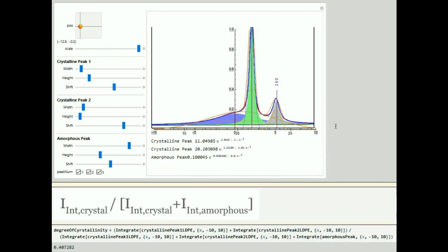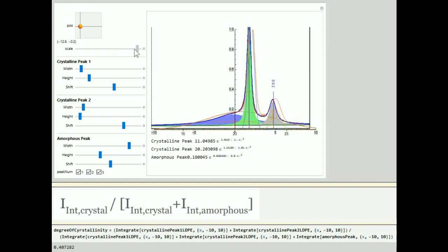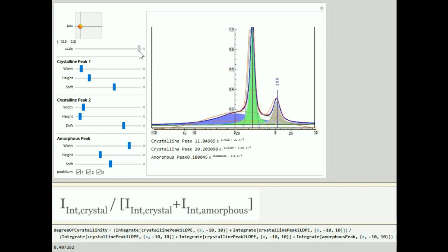First, the code allows the user to adjust the position and the scale of the XRD pattern. The user is then able to adjust the positions of both the crystalline peaks and amorphous peaks. Once the user obtains a fit that they're happy with, they can calculate the degree of crystallinity by determining the integrated area under the crystalline peaks divided by the integrated area under all of the peaks.